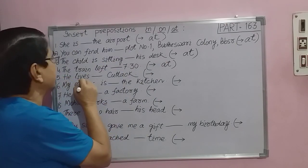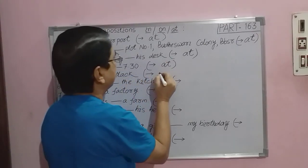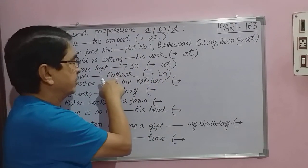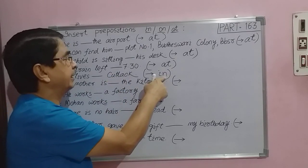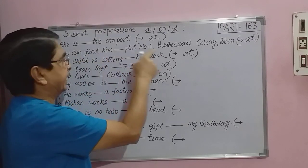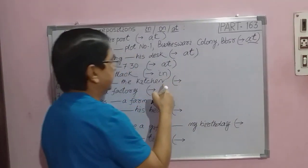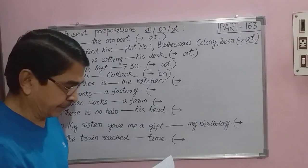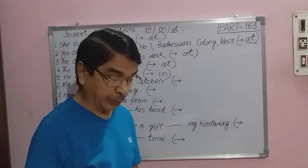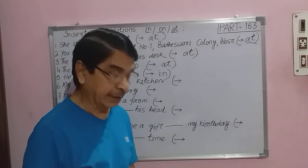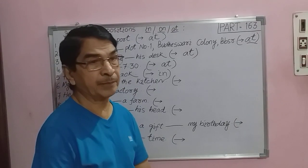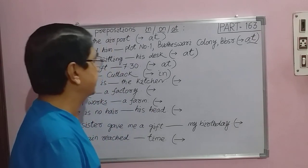Question number five: He lives ___ Cuttack. Here we use IN because Cuttack is a large area — a city. When the place is a large area such as a district, a block, or a city, we use IN. So the answer is: He lives IN Cuttack.